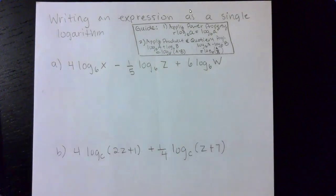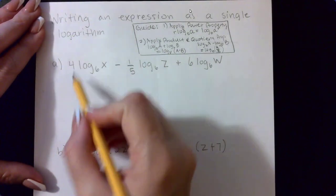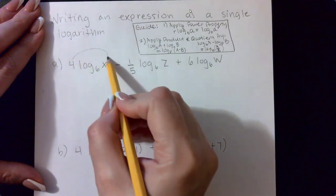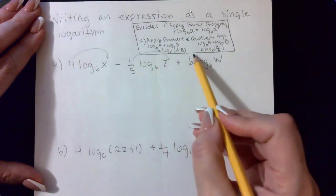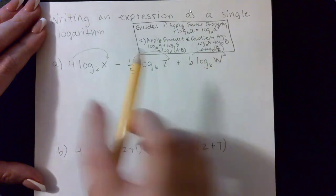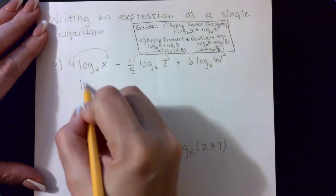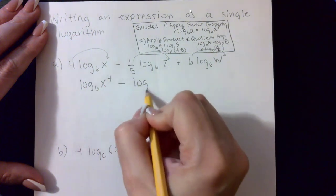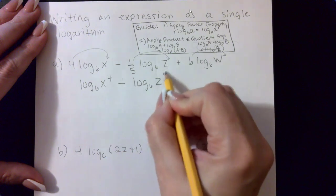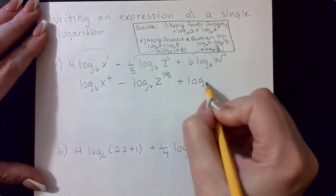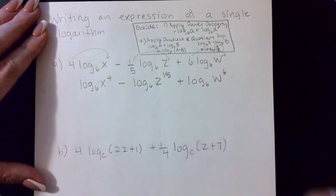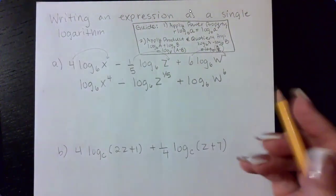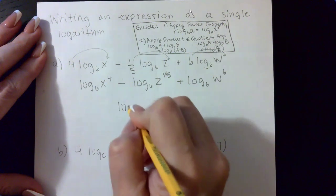Now, if we look at example A, it has 4log6x minus 1/5 log6z plus 6log6w. So the first thing we're going to do is take those coefficients and apply them as exponents. We are not doing anything with the plus and minuses in the front. So this will become log6x to the 4th power minus log6z to the 1/5 power plus log6w to the 6th power. Then we will apply our logs and quotients to write this as one single logarithm.